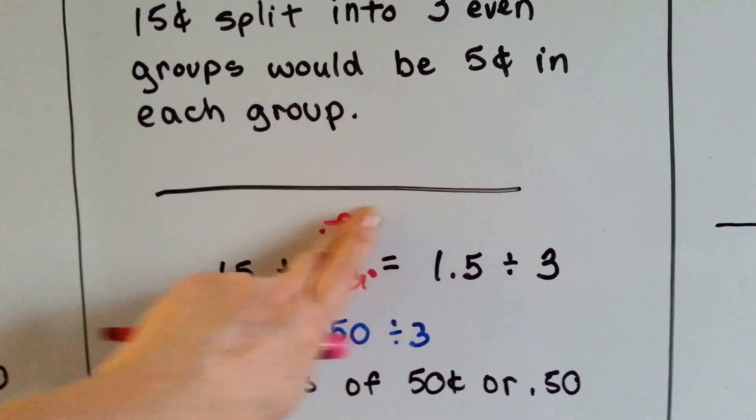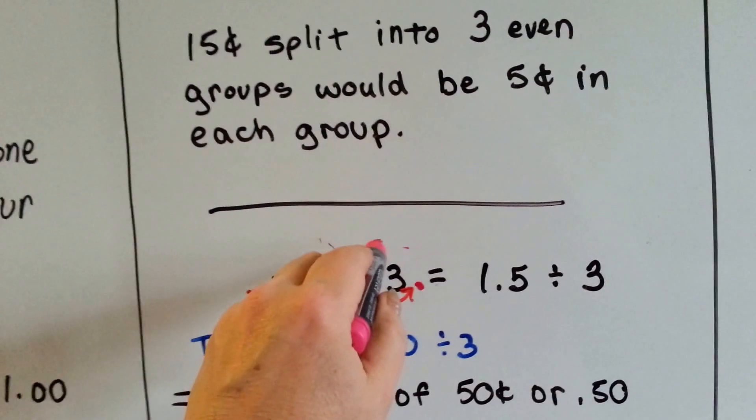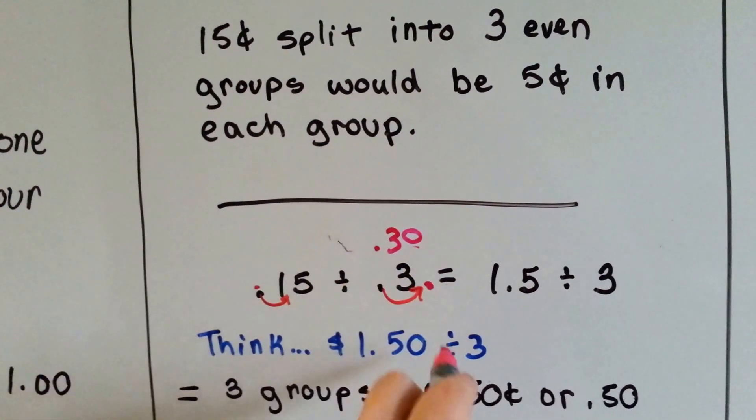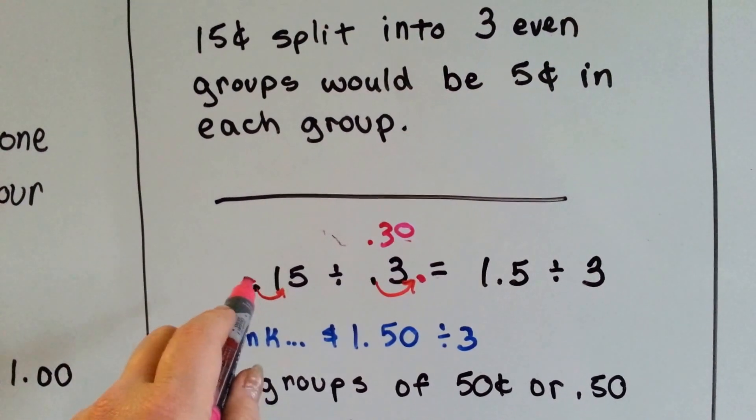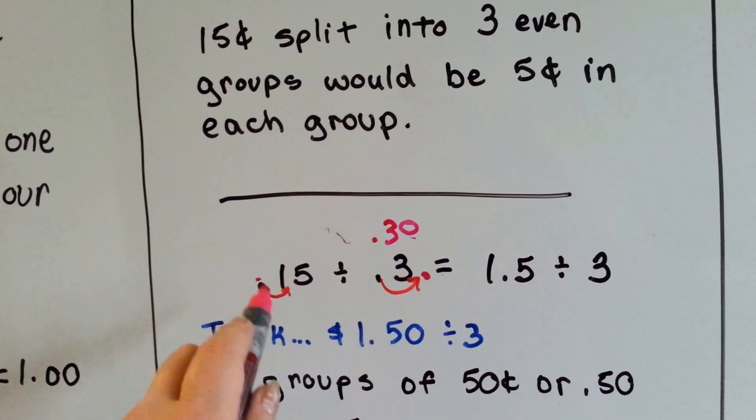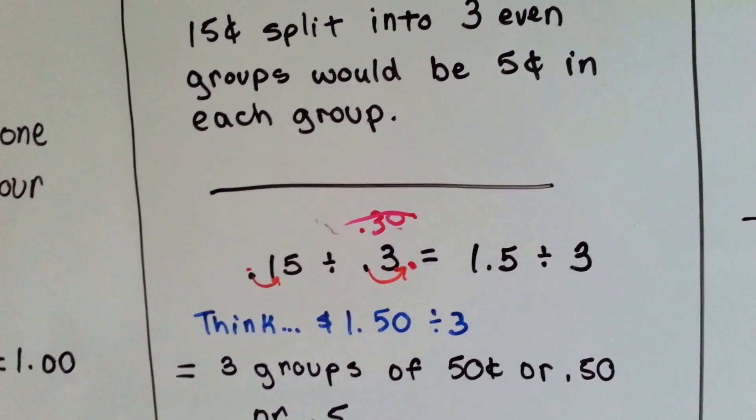What if we had 15 cents divided by 0.3, which really means 30 cents? Point three has an invisible zero back here. What we do is we move the decimal point one place for the divisor. The dividend gets jealous. It gets moved one place. And now our problem is easier. We don't have to worry about the 30 cents anymore.